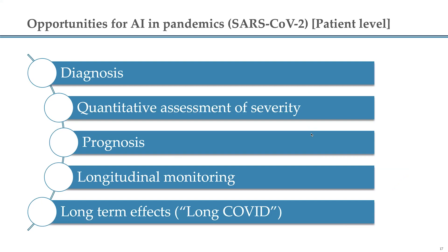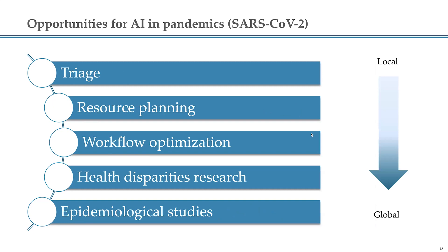From the COVID perspective, what we ended up doing with our algorithm included diagnosis, quantification of severity, prognosis, and longitudinal monitoring. Having a severity number allows us to better assess if somebody is getting better or worse, which is very useful for hospitalized patients. There's also a lot of interest in long COVID, and we're looking for signals in the chest x-ray measurements related to long COVID. Beyond the patient level, we've also been looking at how the output of these algorithms might be used at a hospital level and a health disparities level — going from local to global scale.